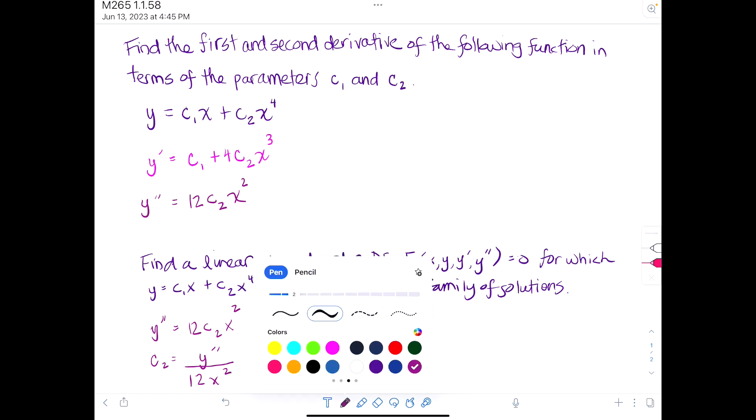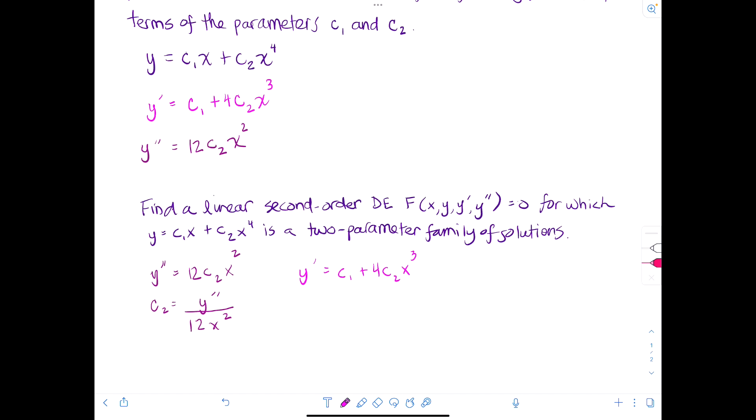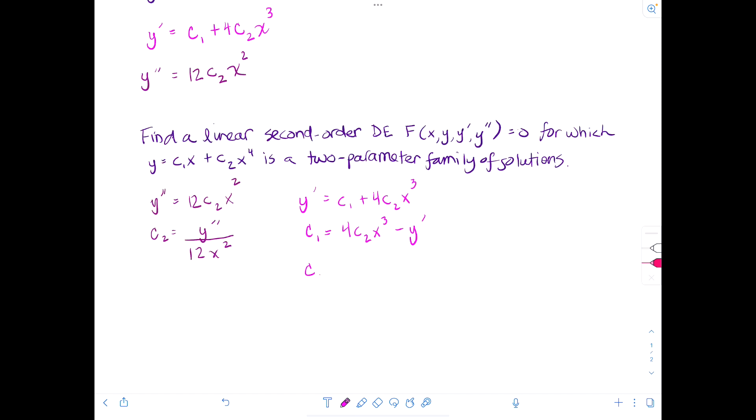And then looking at y prime equal to c1 plus 4 times c2 x cubed, well, if we isolate c1, we will get 4 c2 x cubed minus y prime. So then we'll have c1 is equal to 4 times c2. And remember that c2 we have over here, which was y double prime over 12 x squared.